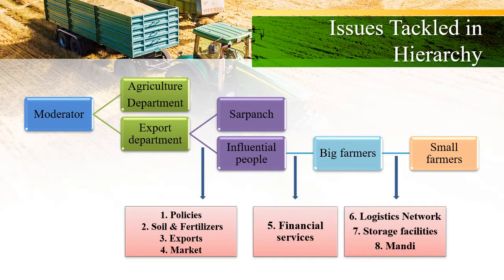With the proposed model, the improved information flow is expected to address various issues related to policies, exports, financial matters, and logistics. Awareness of different government policies will help farmers plan and strategize their cropping pattern, along with exploring other business opportunities. Farmers can also get detailed information on soil quality and suitable fertilizers through awareness camps organized by the agriculture department. Information on high-demand export items will increase the diversity of crops in Indian agriculture, which normally sticks to traditional crop practices. Farmers will also be able to get correct rates for their produce as per market prices and demands, with suitable access to information about wholesale retailers and big players. Similarly, improved financial services, better bargaining power in Mandis, and proper access to logistics and storage facilities will help farmers improve their agricultural output.